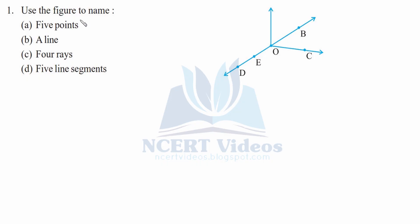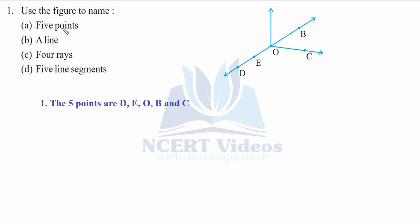Question one: use the figure to name the following. We have to find answers from parts a to d. There are five points represented by D, E, O, B, and C. D is the first point, E is the second, O is the central point, B is the fourth, and C is the last point.